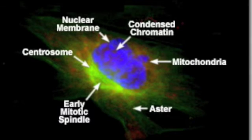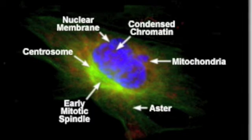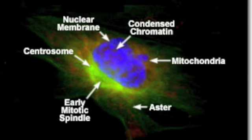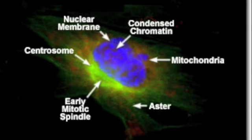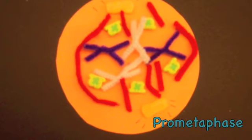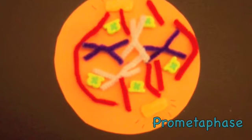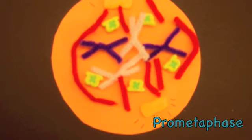Also, the mitotic spindle begins to form, composed of centrosomes and microtubules. The microtubules from the centrosomes lengthen, which propels the centrosomes and causes them to move away from each other. Prometaphase is the process in which the nuclear envelope begins to break down and the chromosomes start to move towards the metaphase plate.